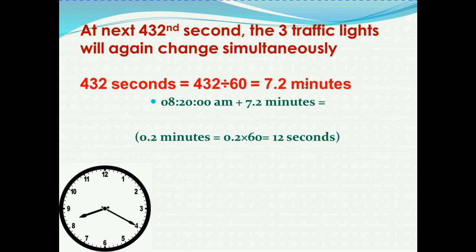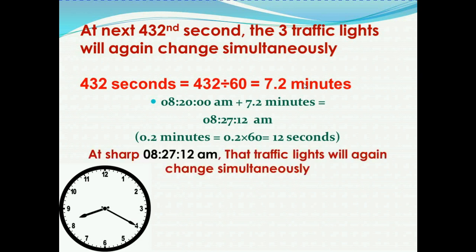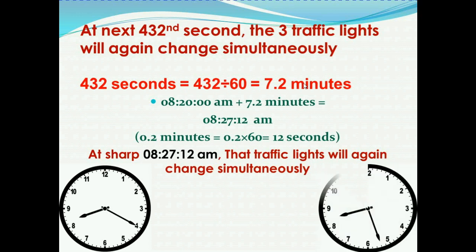So 432 seconds equals 7 minutes and 12 seconds. Adding to 8:20 a.m.: 8:20 a.m. + 7 minutes 12 seconds = 8:27:12 a.m. The traffic lights will again change simultaneously at exactly 8:27 and 12 seconds a.m.